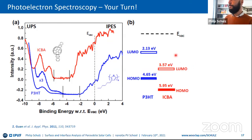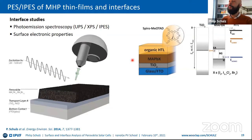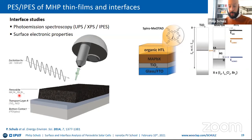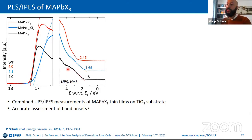Now we move on to the most interesting part: metal halide perovskite surface electronic properties. Photoemission spectroscopy — UPS, XPS, and IPES — can be used to evaluate the surface electronic properties. We put the perovskite in whatever stoichiometry and composition we want to analyze on top of a transport layer. The obvious first choice was titanium oxide, as it was used in state-of-the-art devices back then.